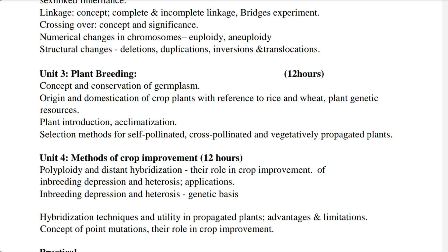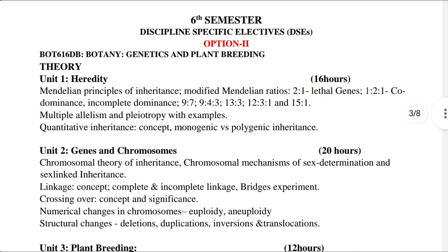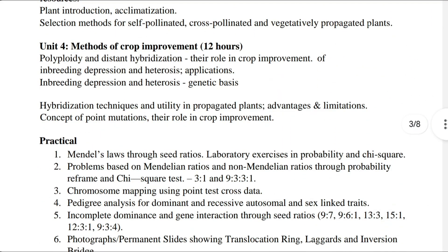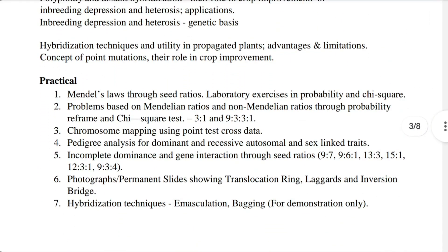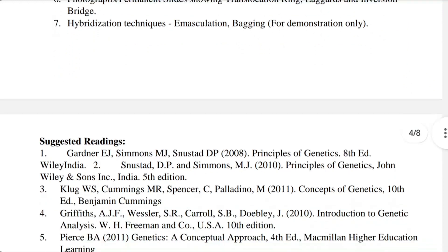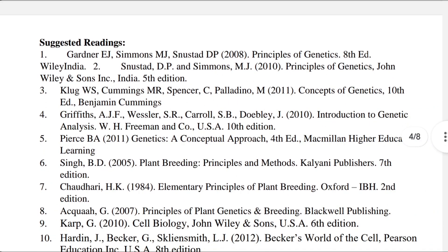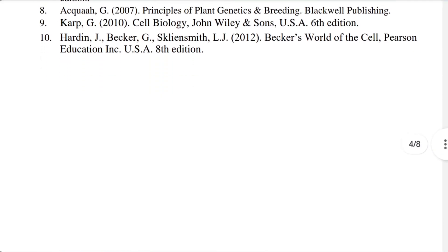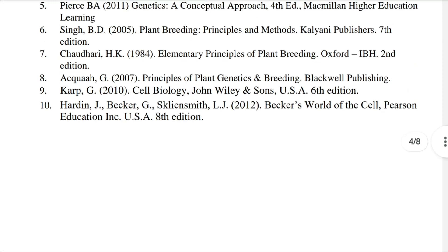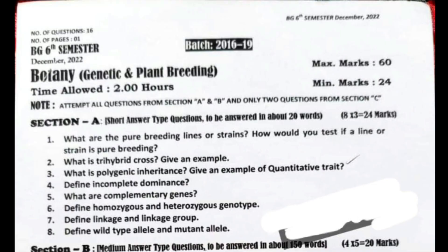Unit 4 is Methods of Crop Improvement. These are the four units of the theory portion along with practical suggested readings. Now let's have a look at the previous year question paper, or guess paper, or model question paper.